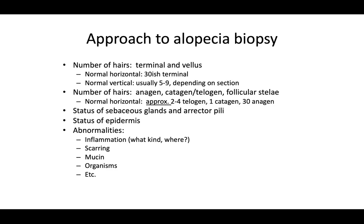Consider what can cause alopecia: inflammation — lymphocytic, neutrophilic, or mixed — areas of scarring, mucin deposition, organisms suggesting infection, or malignant infiltration. Alopecia diagnosis requires coupling the clinical picture with pathology more heavily than most entities in dermatopathology. Scarring alopecias can develop in a background of non-scarring alopecias. Biopsying an early scarring alopecia may show features of early discoid lupus or early lichen planopilaris. If you biopsy a burnt-out scar, you can only say scarring alopecia.